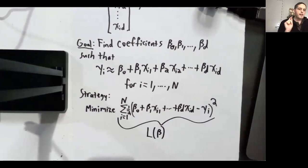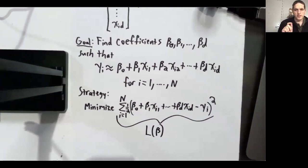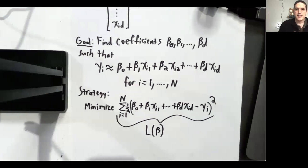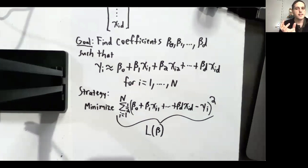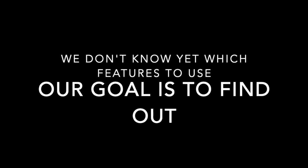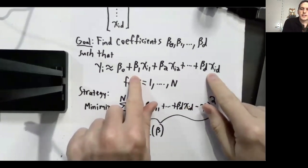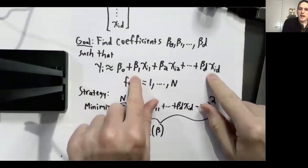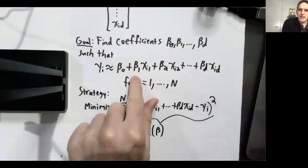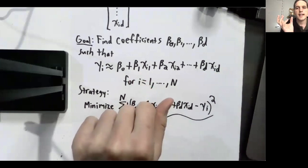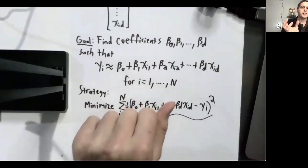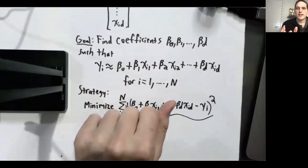But what if we believe that certain features are much more important than other features? For example, if we're predicting selling prices of houses, certainly square footage is a very important feature, but maybe some of the other features are not very important and we don't even need to use them. Suppose our goal is to find a small handful of features such that we can make good predictions using only that handful. If we can find such a handful, it should be possible to set all the remaining coefficients beta j equal to zero — except for the small number of coefficients corresponding to the truly important features — and still get good housing price predictions.